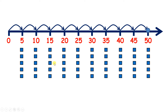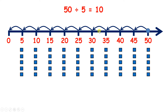So we've been looking at division as counting forwards, but that isn't really what division is. Really, multiplication is repeated addition, but division is repeated subtraction. So 50 divided by 5 is 10, because if we start on 50 and take away 5 each time, we'll need 10 jumps to get to 0.